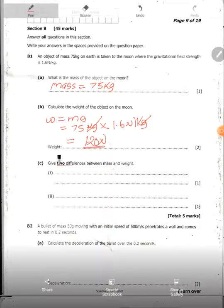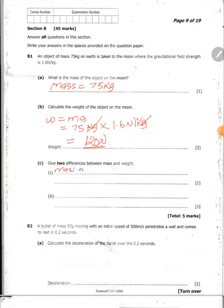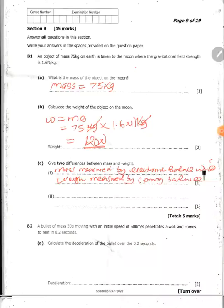Give two differences between mass and weight. In terms of measurement, mass is measured by electronic balance. Weight measured by spring balance. Another one, mass is measured in kilograms. Don't say kgs. Make sure you write it all. Weight is measured in newtons.